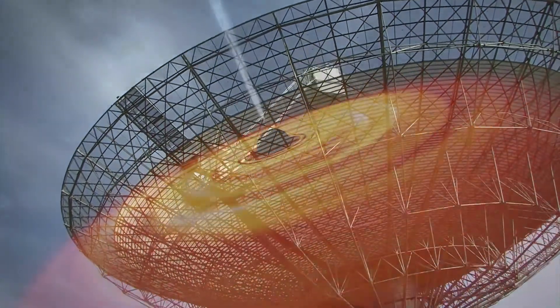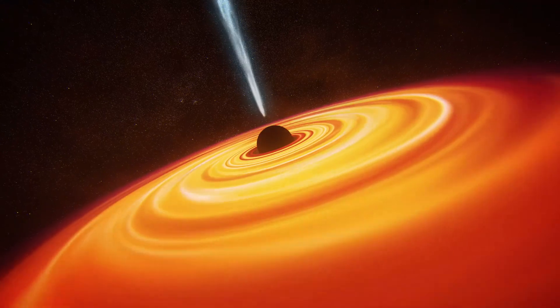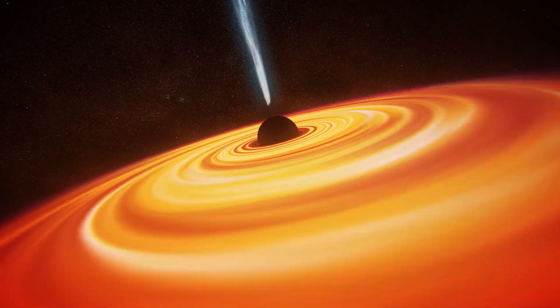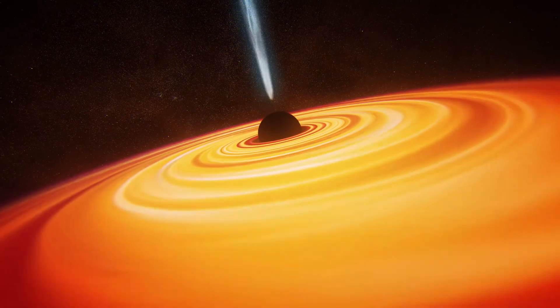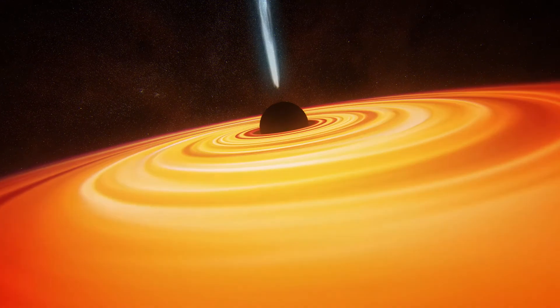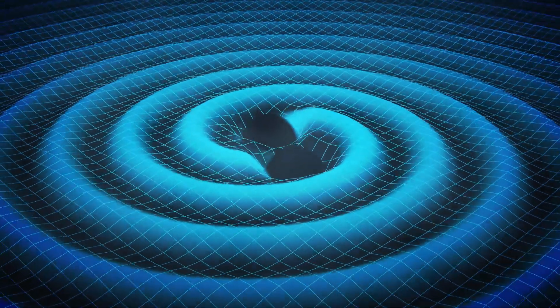Every galaxy contains a black hole at its centre. Some black holes weigh up to 10 billion times the mass of our Sun. When galaxies collide, their black holes sink to the centre of the remaining collection of stars and begin to orbit each other.